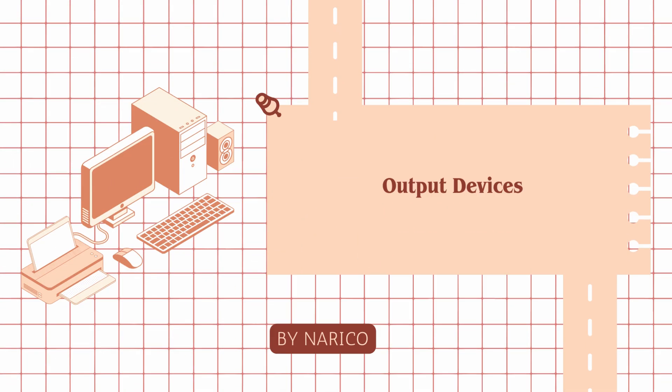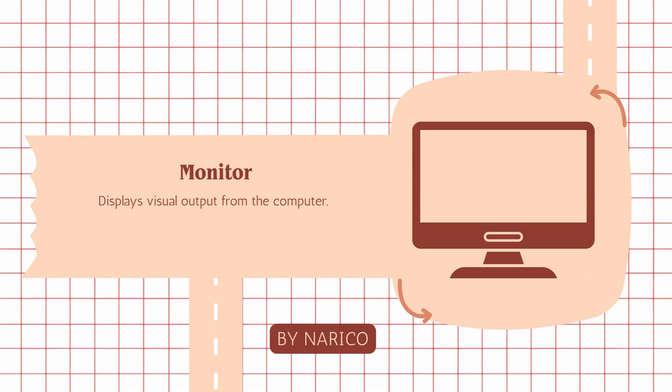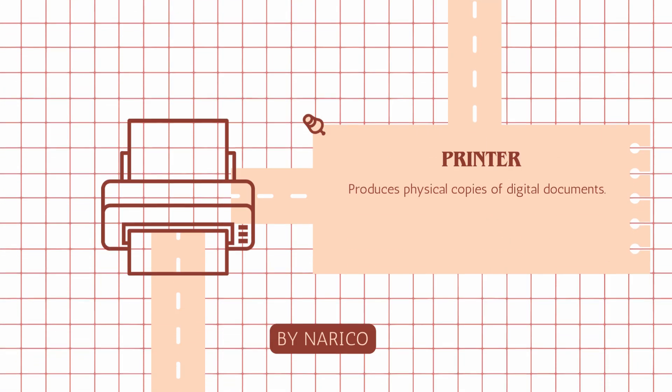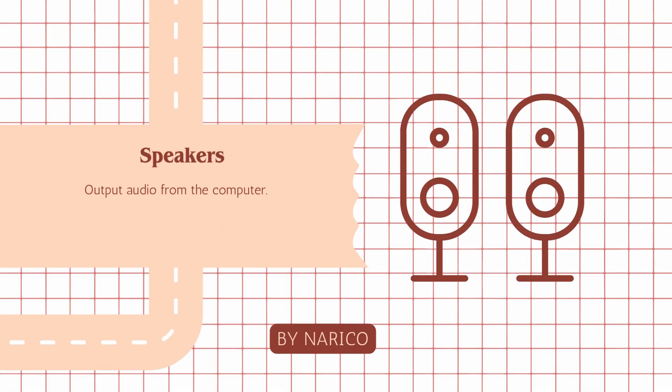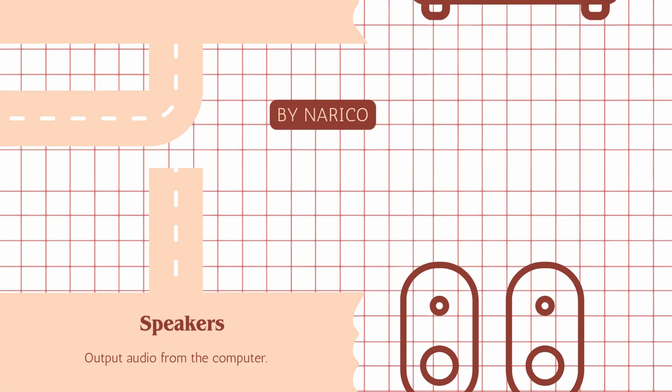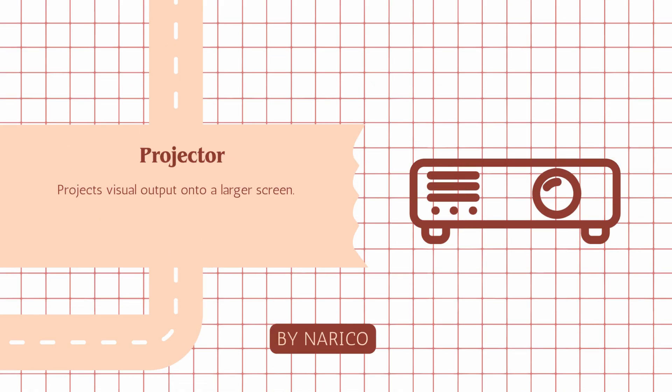Output devices display or produce the results of computer processing. Monitor: displays visual output from the computer. Printer: produces physical copies of digital documents. Speakers: output audio from the computer. Projector: projects visual output onto a larger screen.